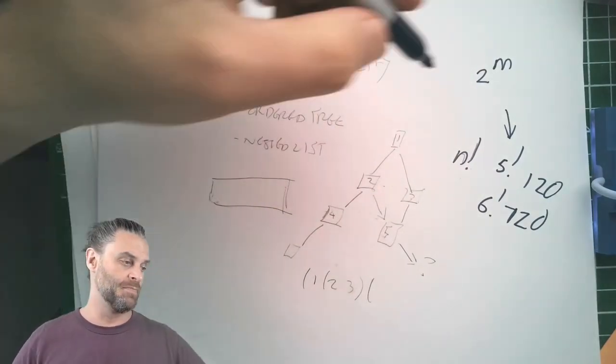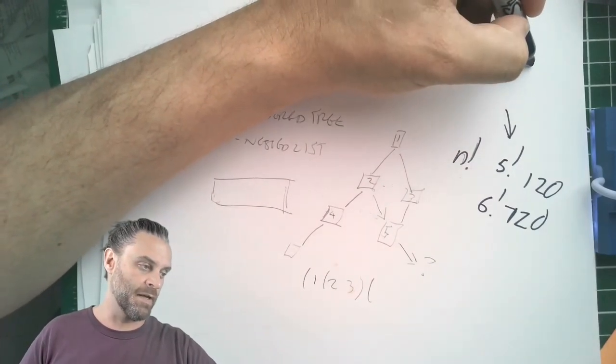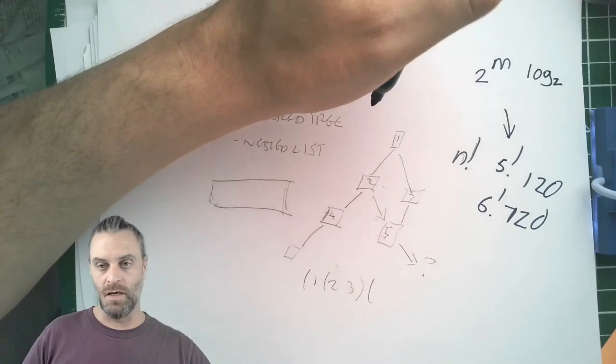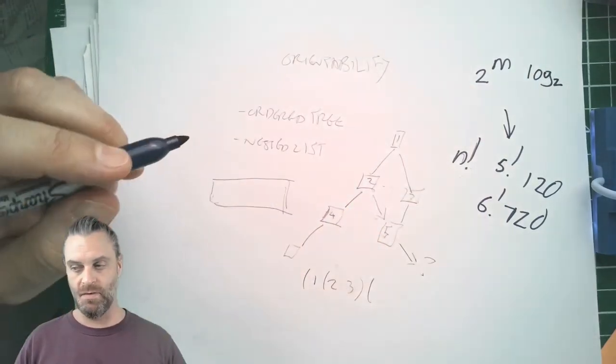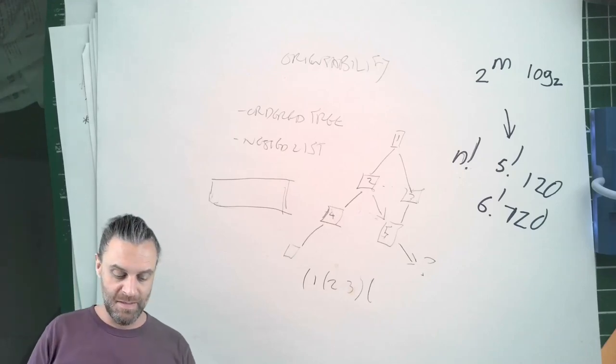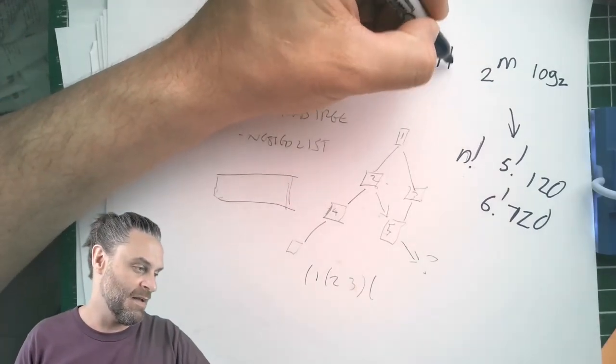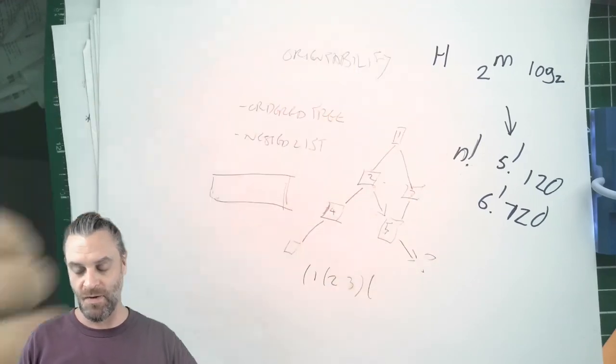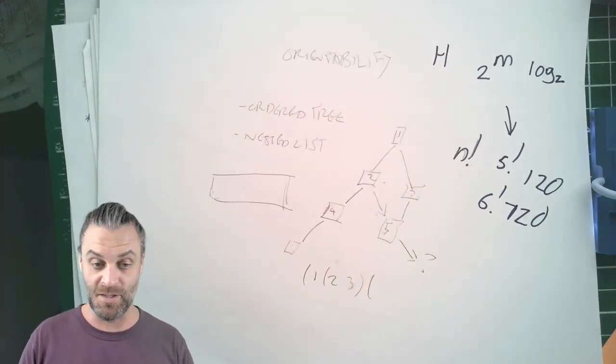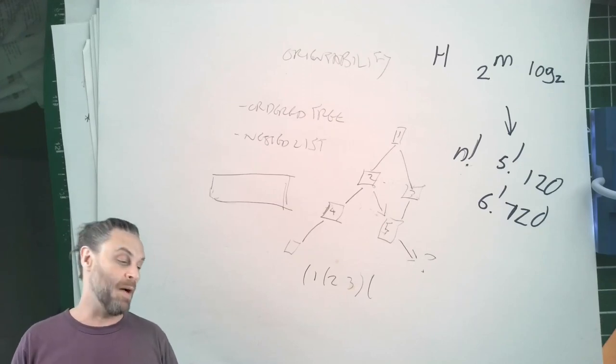So that is log two, like the sort of the bits. Going back to entropy, like that's the same thing. H is whatever. I can't remember what Shannon's equation is, but that's sad of me.